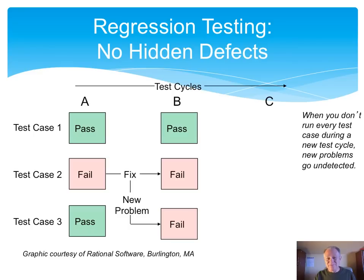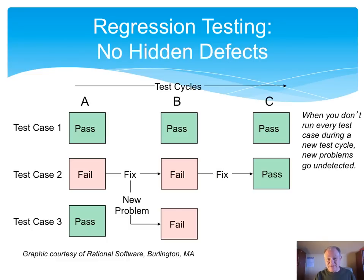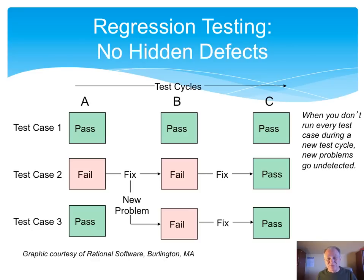So we not only failed to fix the problem of case two, but a second one has been introduced — a dynamic that nearly every tester I know has seen in their experience. In the third cycle of testing, we've reported both failures. We test the fixes, and the first case passes, the second case now passes — great news — and the third case passes. So when we release the software in this case, we have the assurance that the key cases and key functions are going to work as expected.